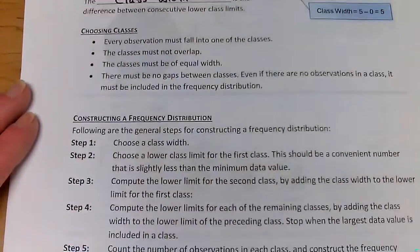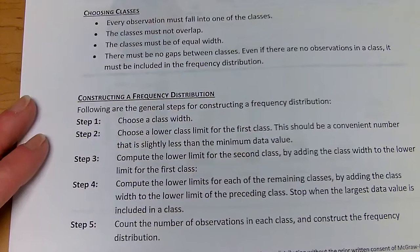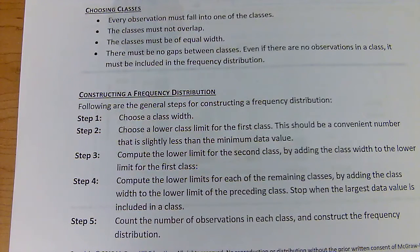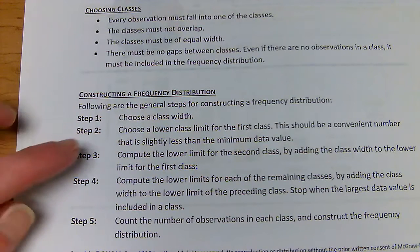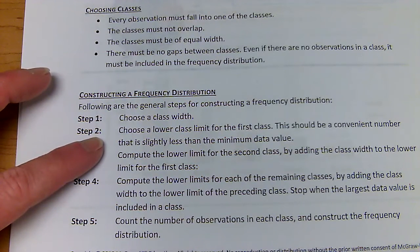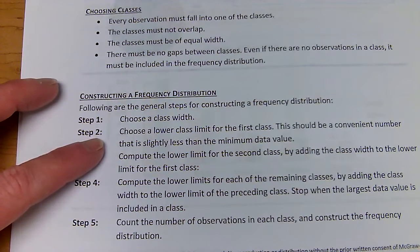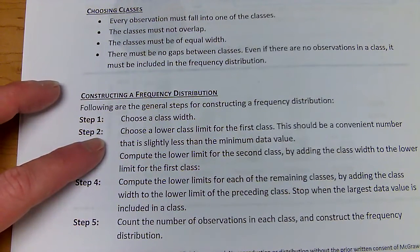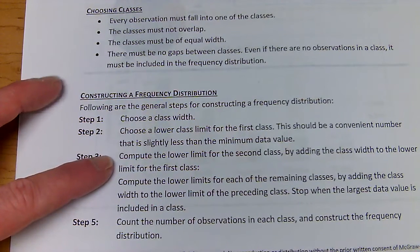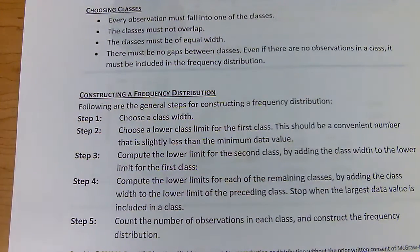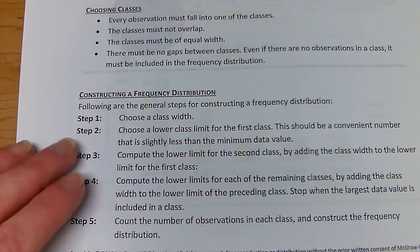When we construct a frequency distribution, we're going to choose a class width first. Once we choose a class width, we choose a lower class limit for the first class. This should be a convenient number slightly less than the minimum data value. Then we compute the next lower limit by adding the class width and continuing on.